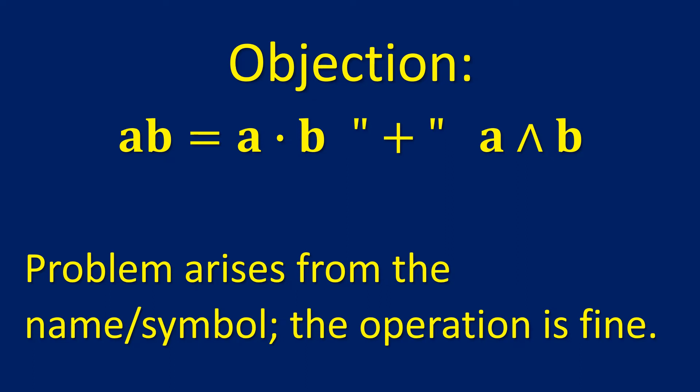So what's the objection? The way we combine those two pieces of information is in the geometric product of the two vectors a and b. Here is our information about their parallelity and perpendicularity, and we combine them using addition. The operation is fine, but the problem arises from the use of that name and symbol, which raises certain expectations.